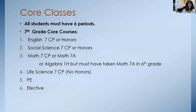In seventh grade, all students must have six periods. Seventh grade core courses are English 7 CP or English 7 Honors, Social Science 7 CP or Social Science 7 Honors, Math 7 CP or Math 7 Accelerated. If a student was in Math 7 Accelerated in sixth grade, then they would move into Algebra I Honors. Life Science 7 CP — there is no honors for science in seventh grade — and then students have PE and an elective.